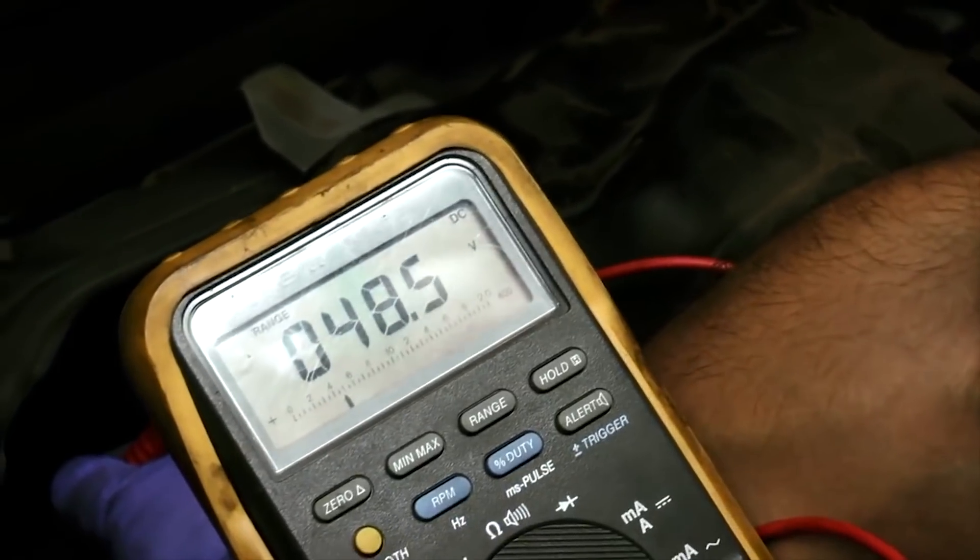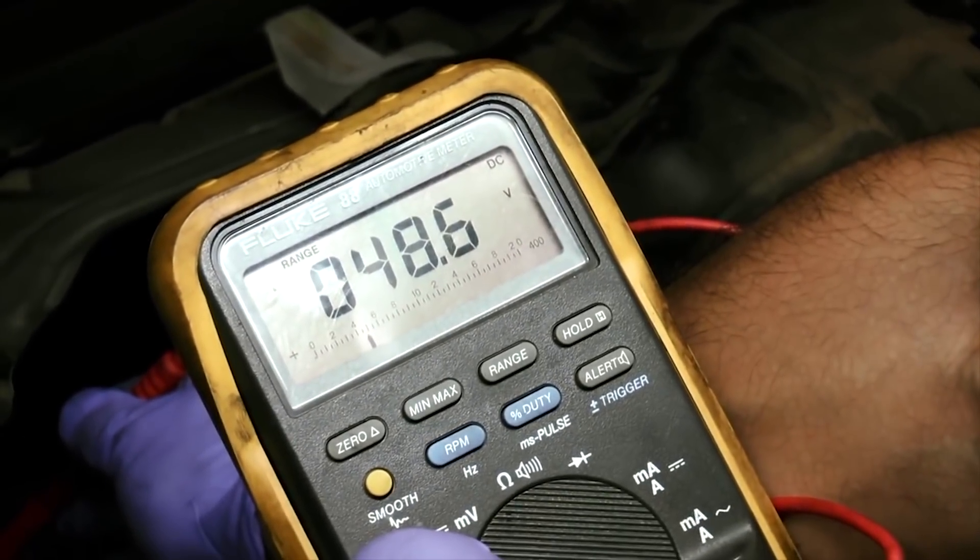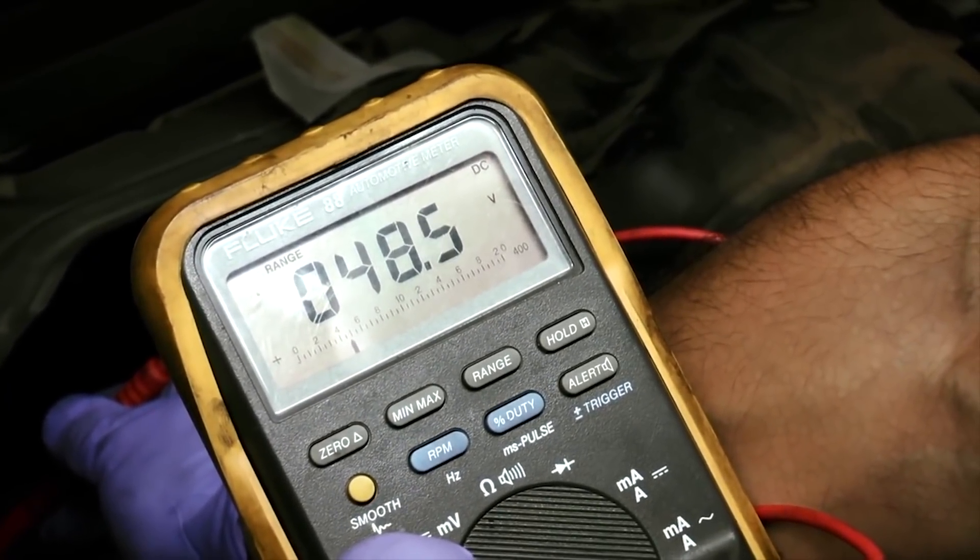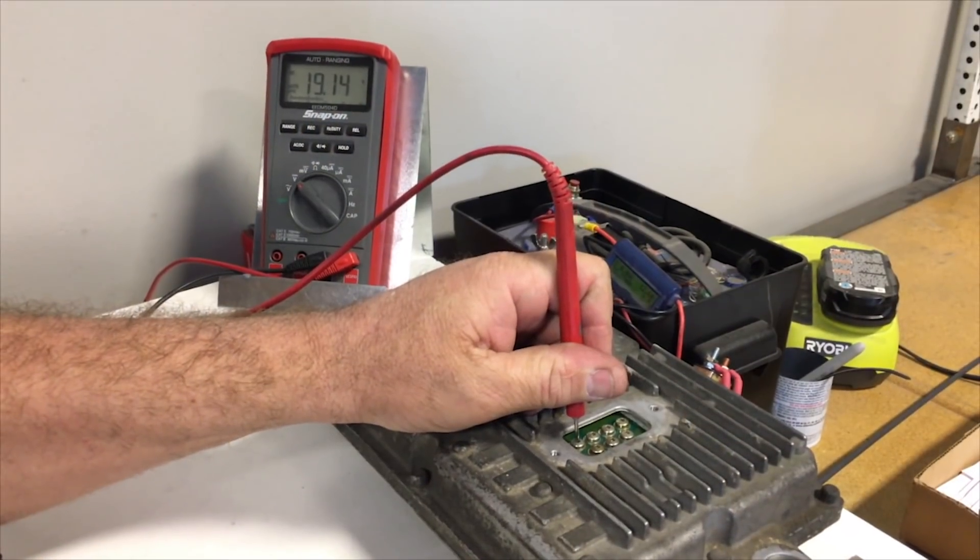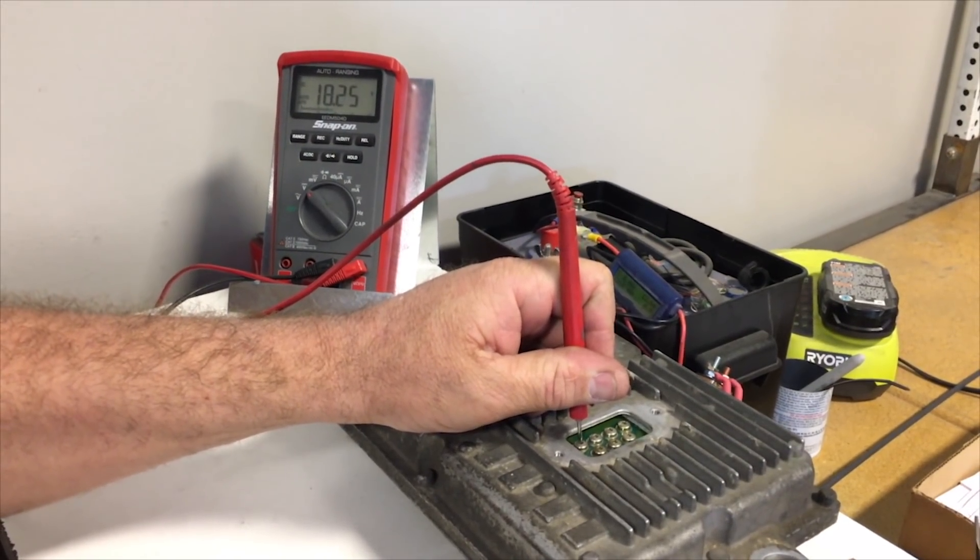The FICM power supply is designed to output 48 volts, which actuates the fuel injectors. However, after time, some FICMs will produce less than 48 volts, which leads to problems like hard starts and rough idle.